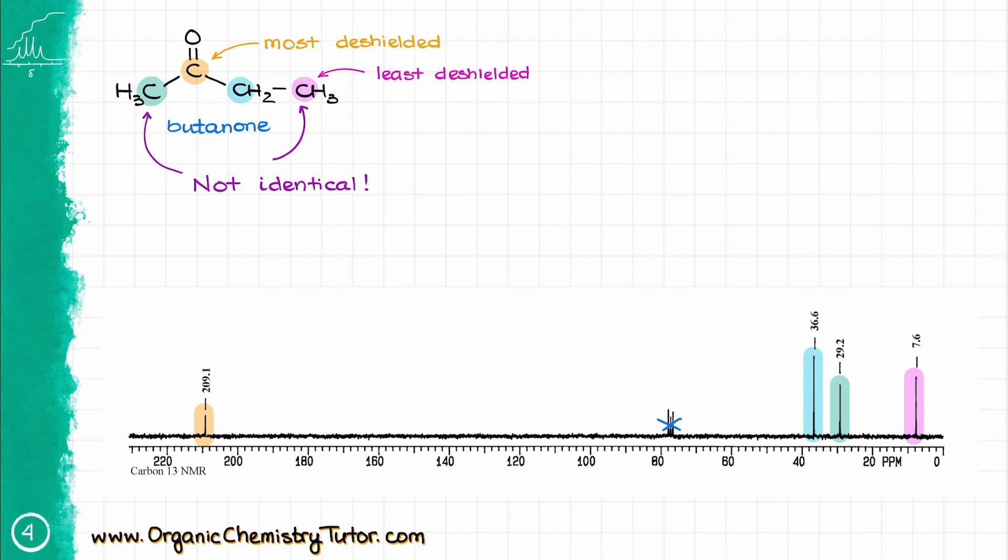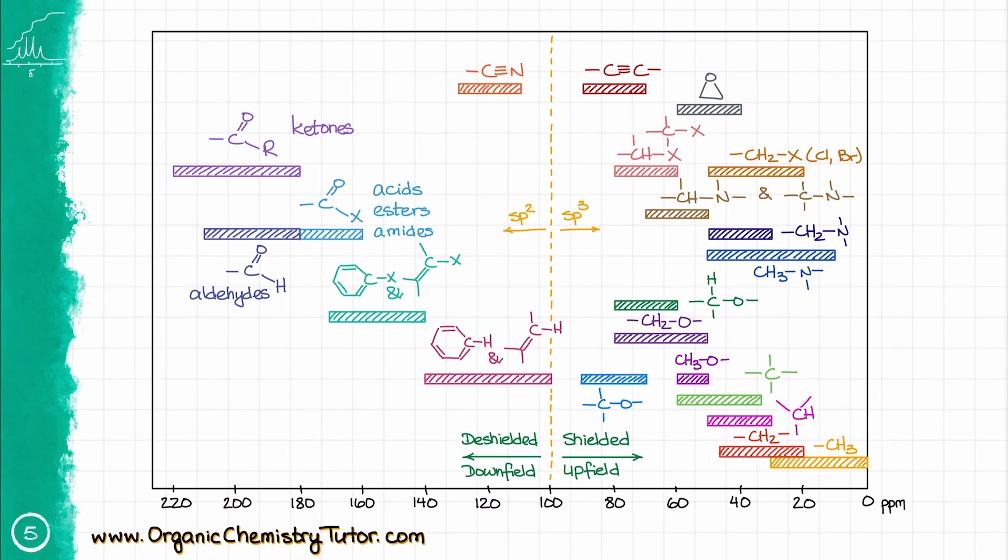However, you shouldn't just rely on the guesswork when it comes to the positioning of the signals in the C NMR. You should become very comfortable with the C NMR reference table. As always, I don't recommend you just sit down and memorize the whole thing. You'll just end up with a huge mess in your head, but rather keep it handy as a reference table at your disposal. And with practice, you'll memorize most of those numbers anyways.